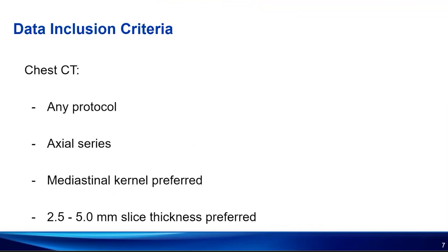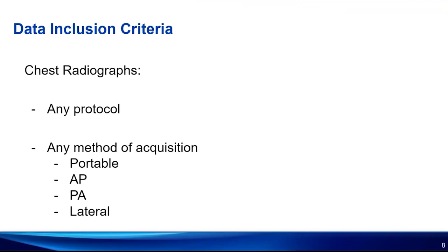In terms of chest CTs, any protocol is acceptable — with or without contrast, CTPAs, it doesn't matter. We are looking for axial series images only. We prefer the mediastinal or soft tissue window kernel. If possible, slice thicknesses between 2.5 and 5 millimeters — this makes the annotation process easier. If you only have thin slice images, that's okay. In terms of chest X-rays, any protocol is okay in any method of acquisition — whether they're portable studies, AP projection, PA, or lateral, those are all okay.